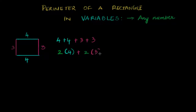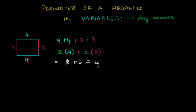Now I can calculate the answer. Two times four is eight, plus two times three is six. The total equals 14. So 14 is the perimeter of this rectangle.